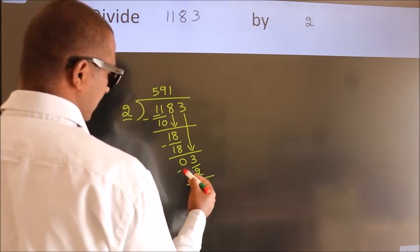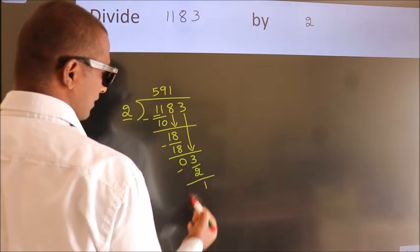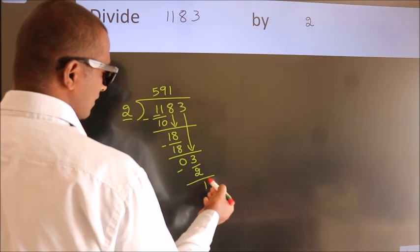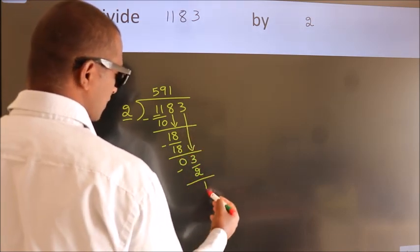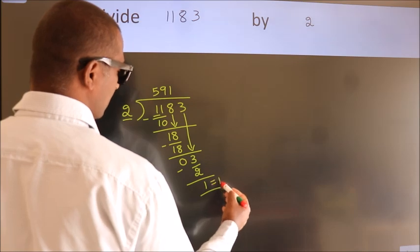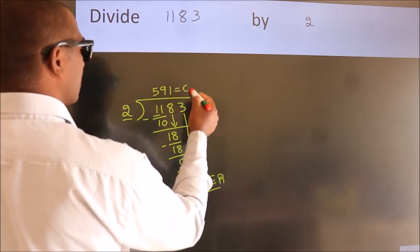Now we subtract. We get 1. After this, no more numbers to bring down. So we stop here. This is our remainder. This is our quotient.